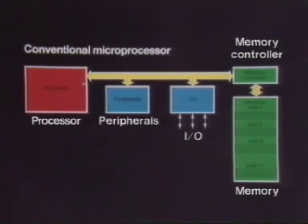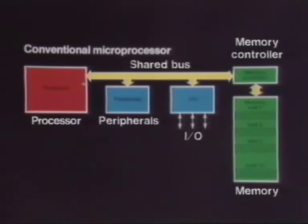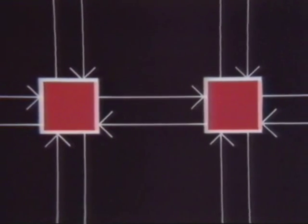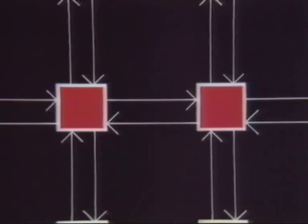The problem with conventional microprocessors is that they communicate using a shared bus, and because only one transaction can take place at a time, the result is a communications bottleneck. Not so with the transputer. Its links are not shared — each one connects just two transputers. This allows each communications link to operate concurrently and yet independently of all other links.